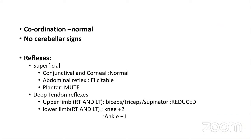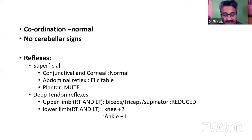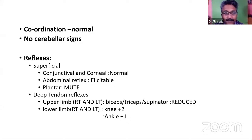Coordination is normal, no cerebellar signs. Superficial reflexes: conjunctival and corneal normal, abdominal reflex elicitable, bilateral plantar responses mute. Deep tendon reflexes: upper limb biceps, triceps, and supinator reduced but present (1+) bilaterally. Lower limb: knee 2+, ankle 1+ bilaterally. Reflexes are present, which rules out Guillain-Barré syndrome, where universal areflexia is expected.